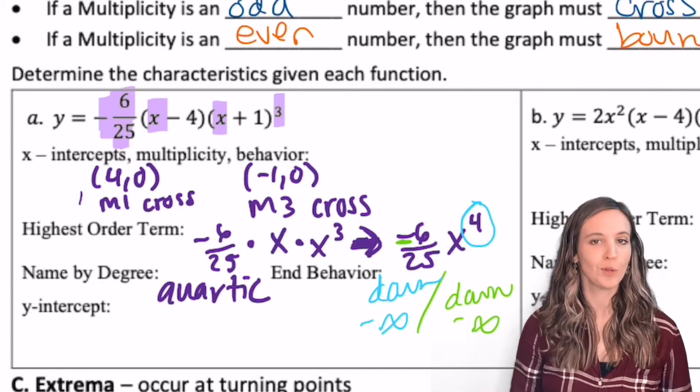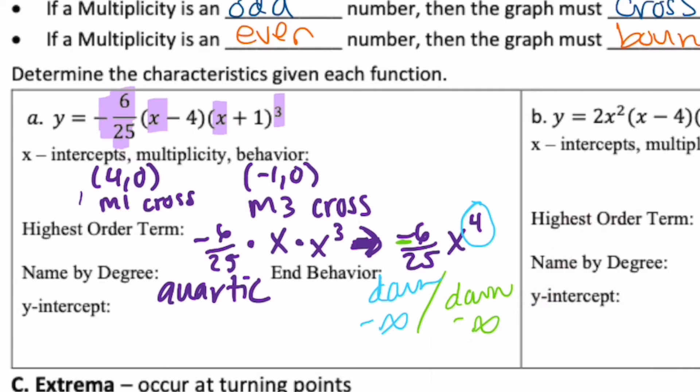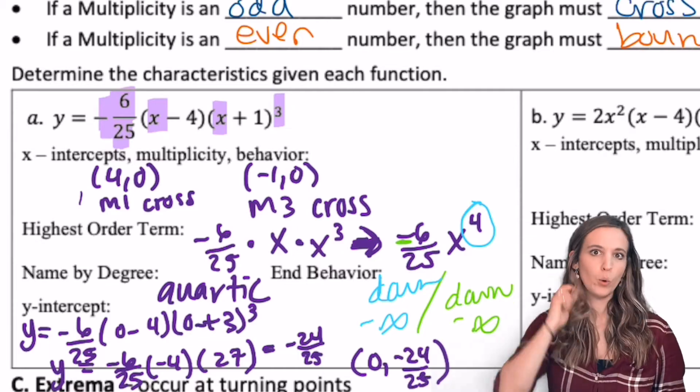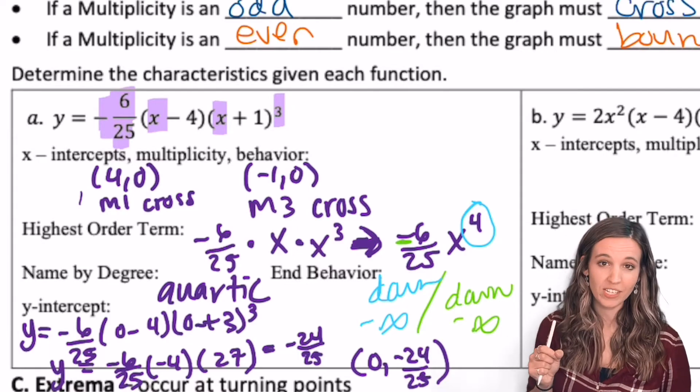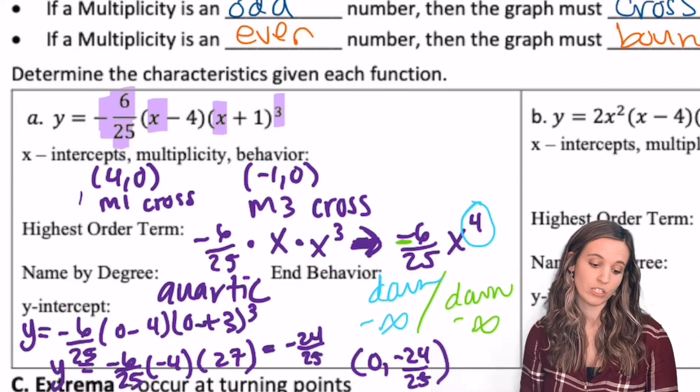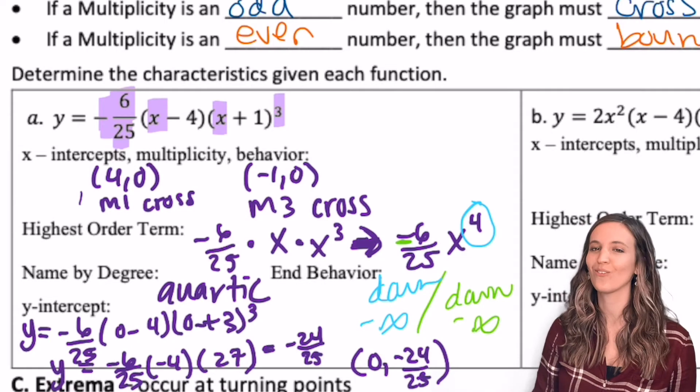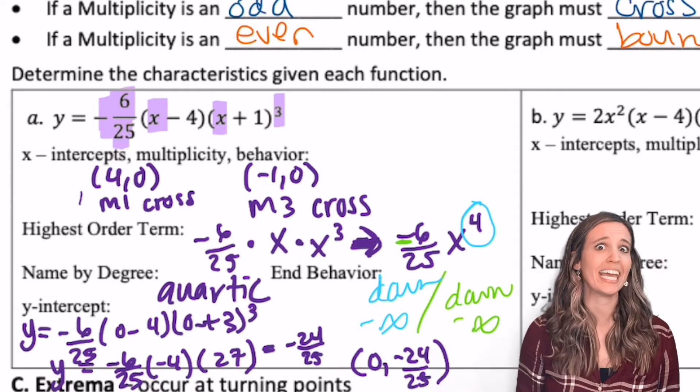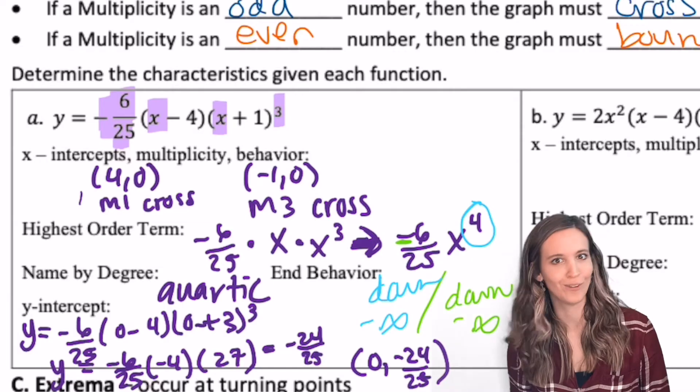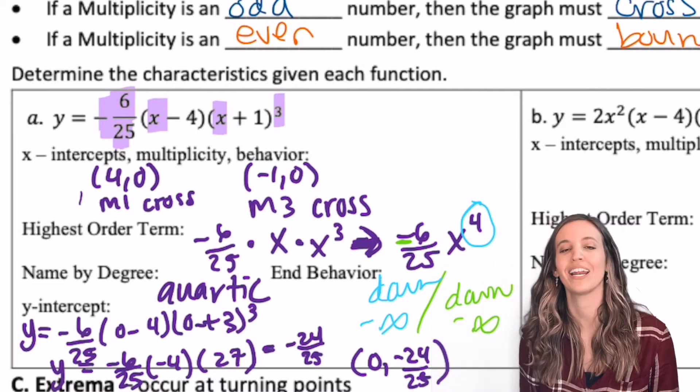Y intercept, no matter which form, I can just plug in zero for x to find it. When I plug in zero, I do the parentheses first, then I'm multiplying everything out to get negative 24 25ths. Remember, this is an intercept, so I'm not going to write y equals negative 24 25ths. I'm going to write it as a coordinate.